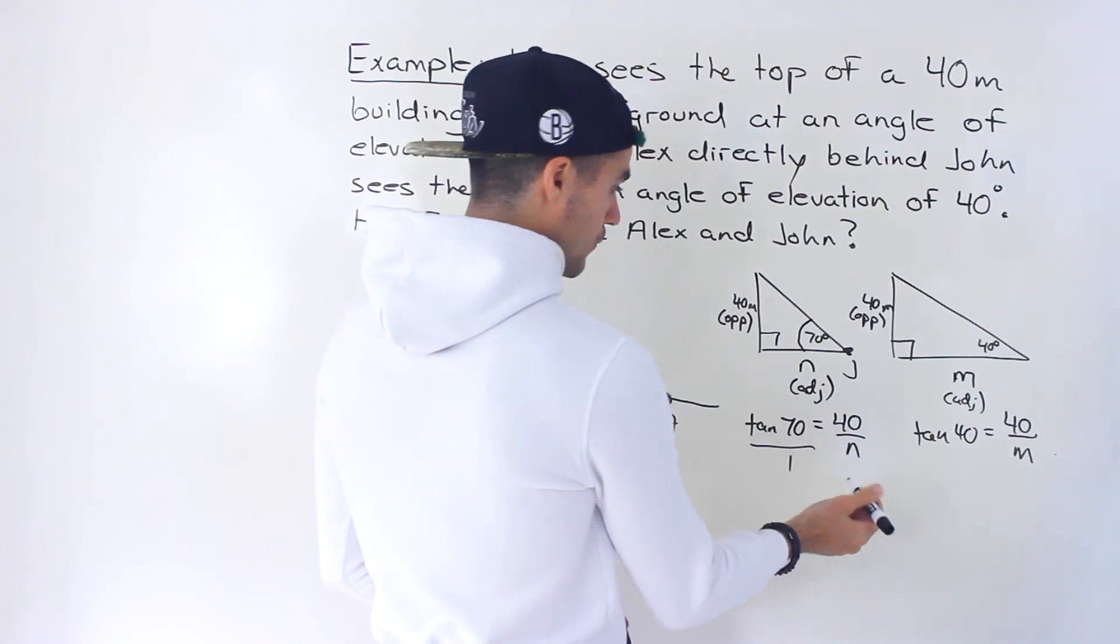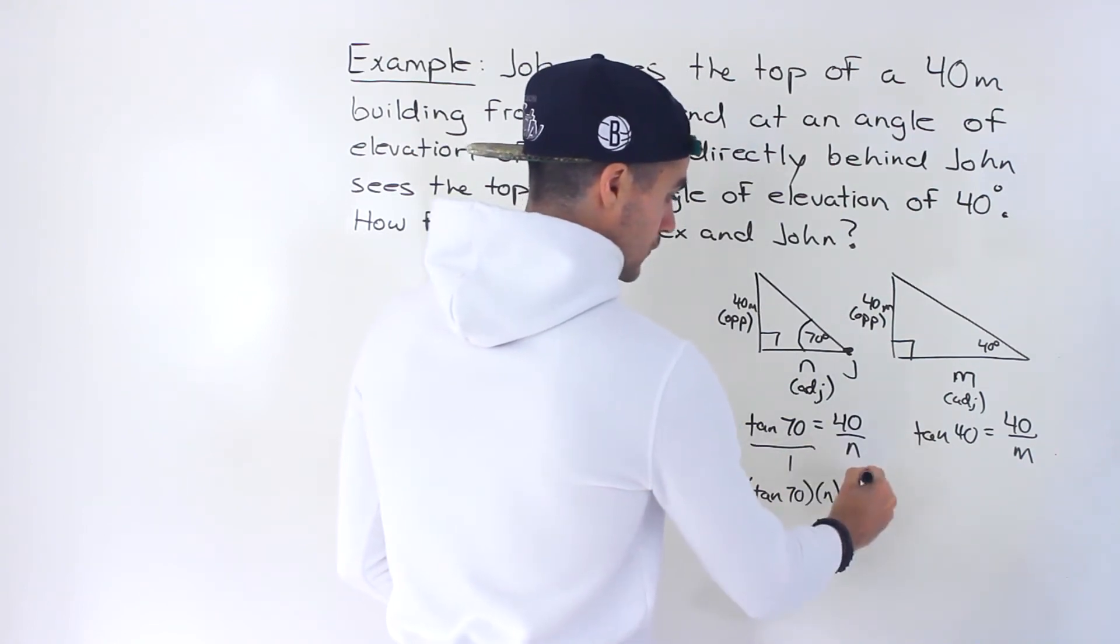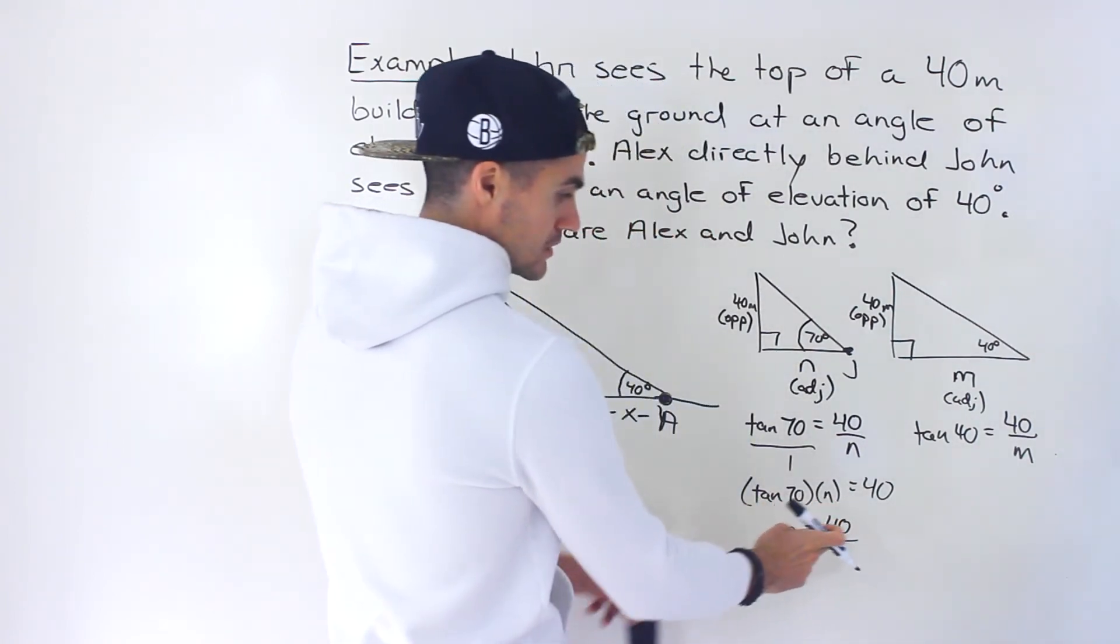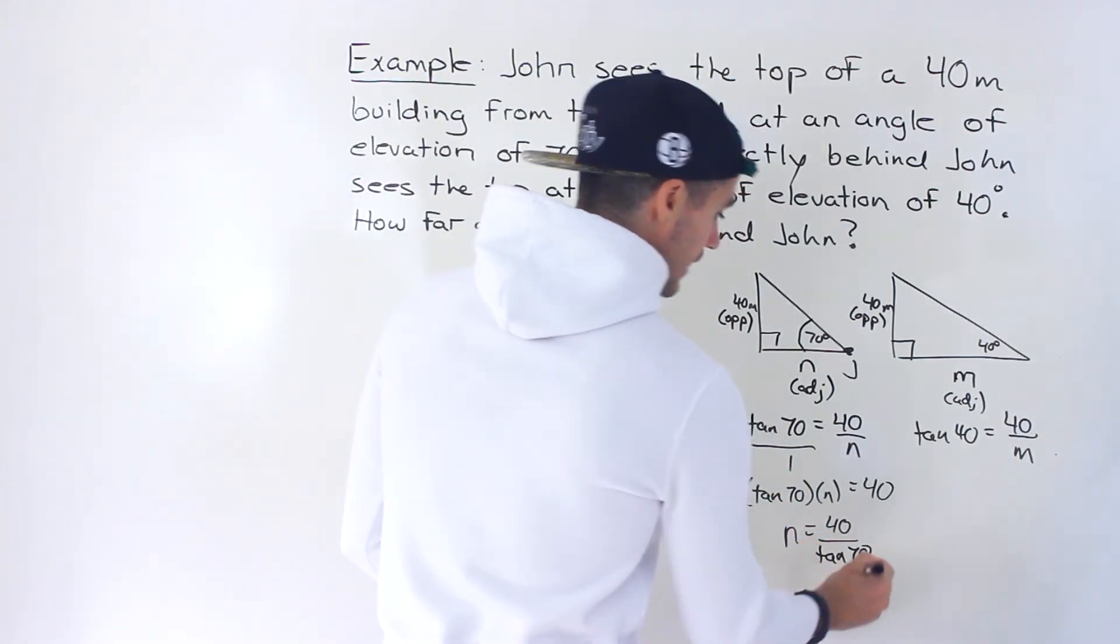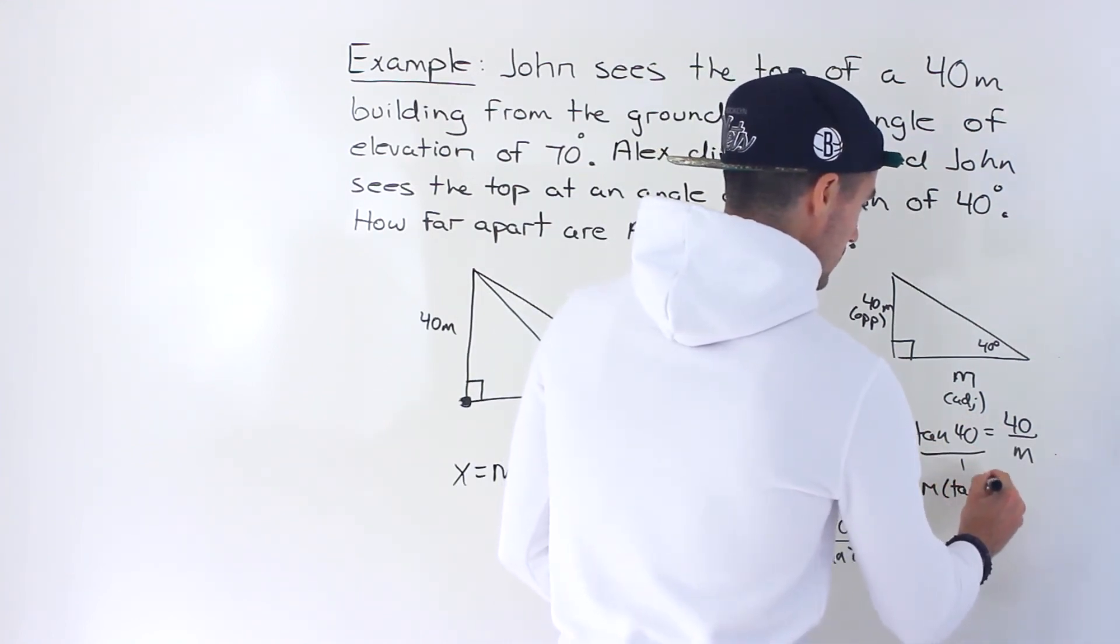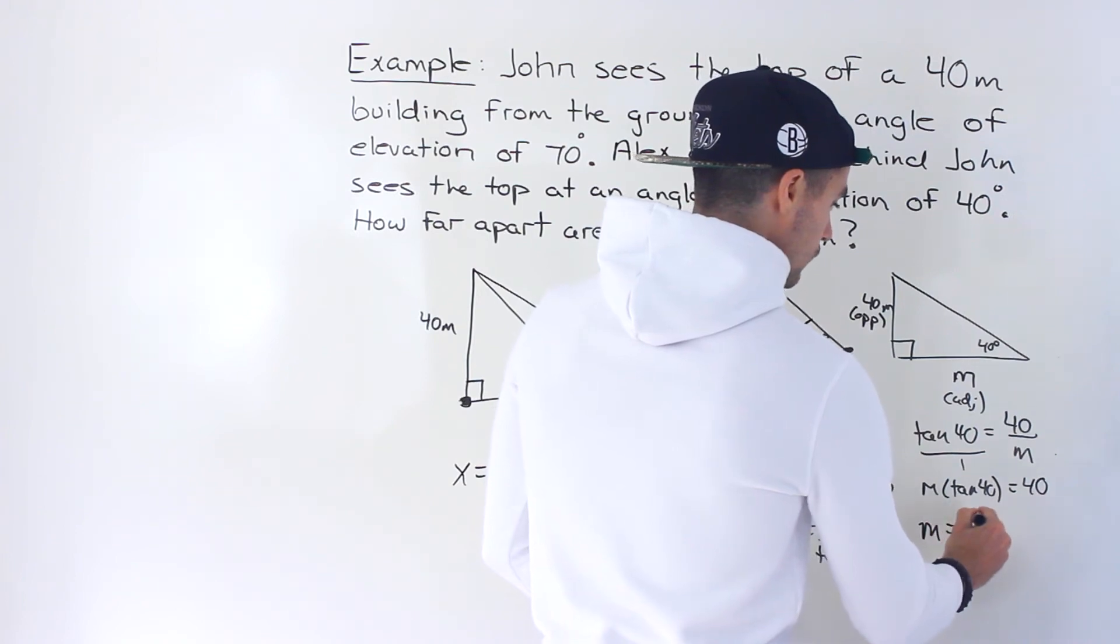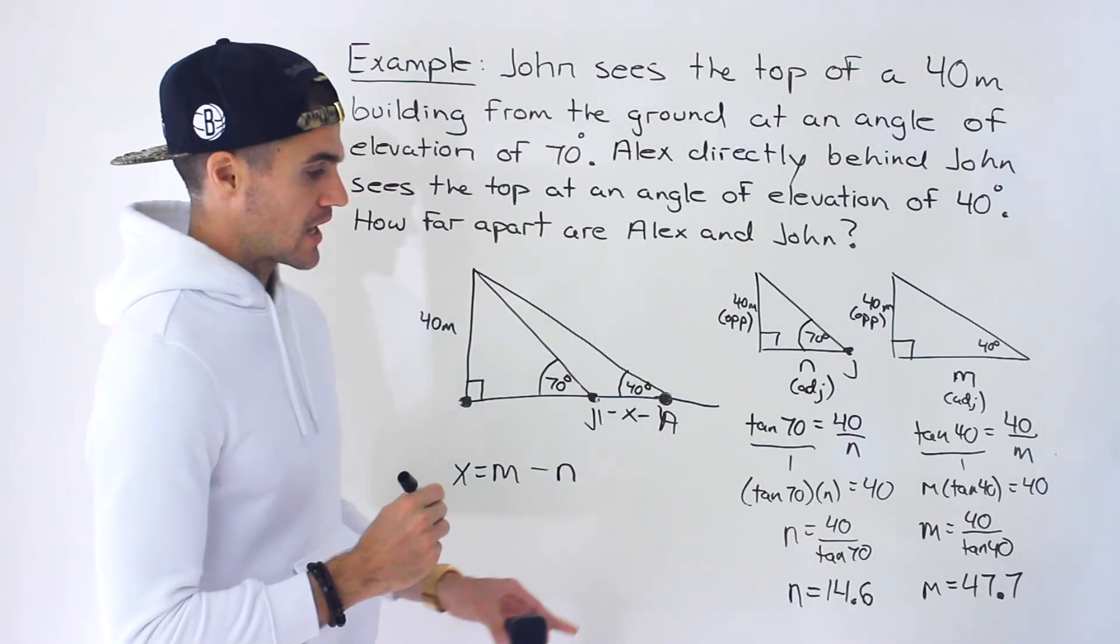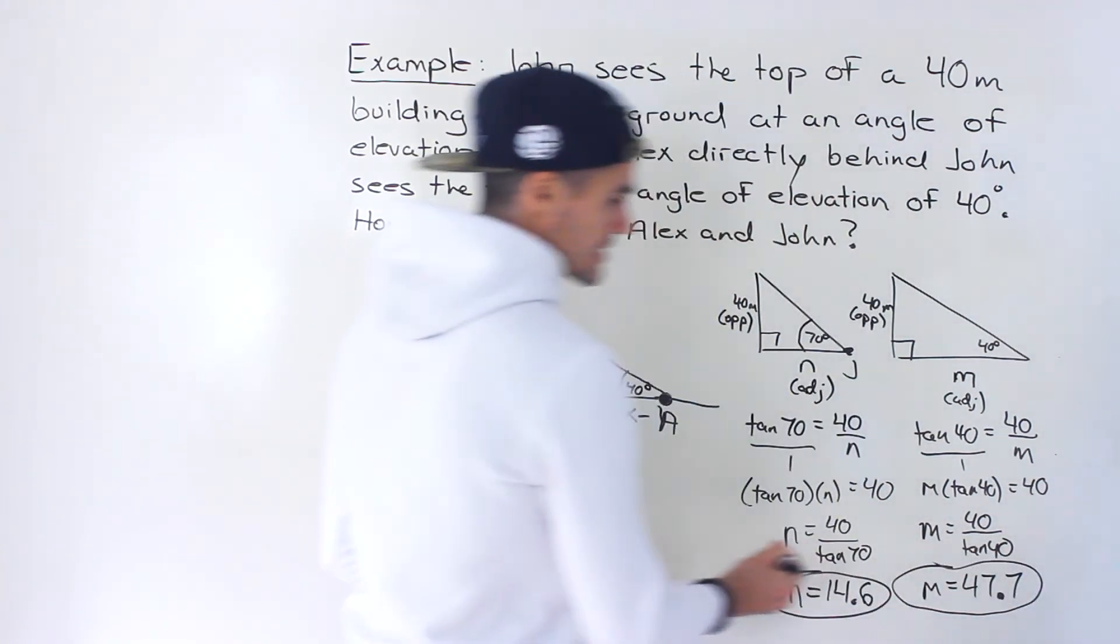And now we can use both of these equations to solve for the M and N values. So here, if we isolate for the N, let's cross multiply. So we'll have tan 70 times N is equal to 1 times 40, which is 40. So N would equal 40 divided by tan 70. Divide both sides by tan 70 to isolate for that N value, like that. And then if we follow the same process, cross multiply here. So we'll have M times tan 40 is equal to 40 times 1, which is just 40. And then M is going to equal 40 divided by tan of 40, like that. And when you do those calculations, you'd get an N value of 14.6 meters and then an M value of 47.7.